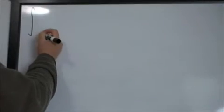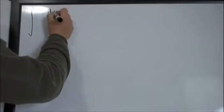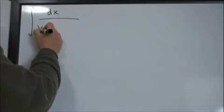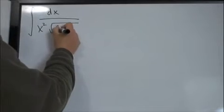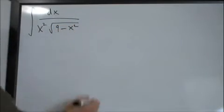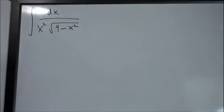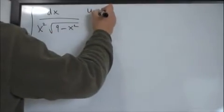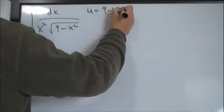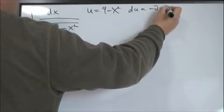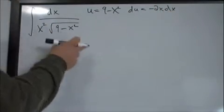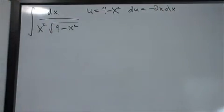Let's find the integral of dx divided by x²·√(9-x²). The first thing to notice is that we can't use u-substitution: if we took u = 9-x², then du = -2x dx, but we don't have that factor anywhere in the integrand, so that won't work.